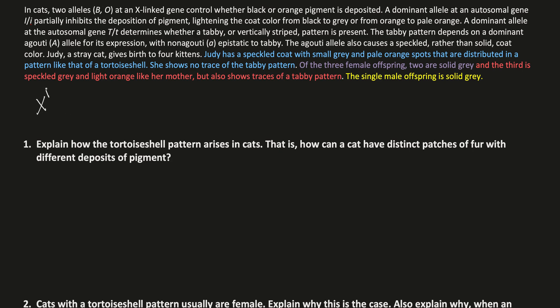XB is for black and XO is for orange. A dominant allele at an autosomal gene, big I and little I, partially inhibits the deposition of pigment, lightening the coat color from black to gray or from orange to pale orange.